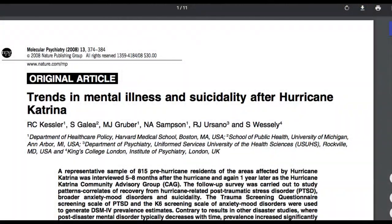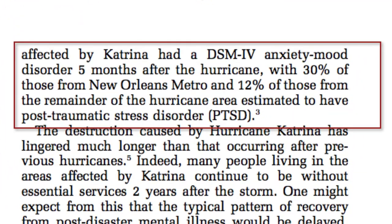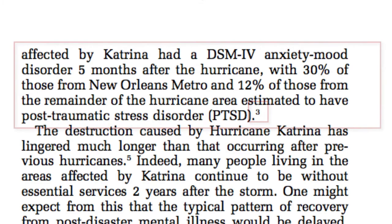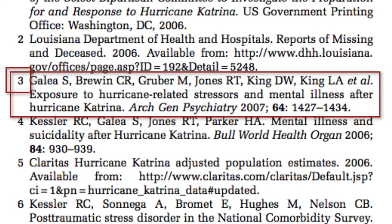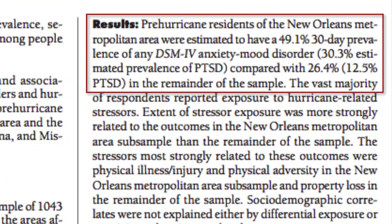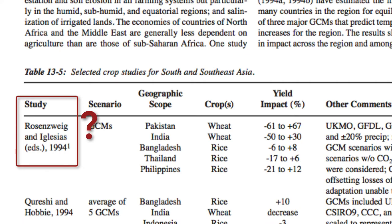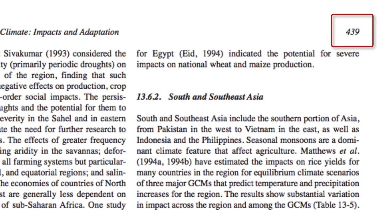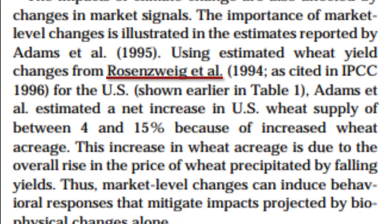It can be confusing when the information you want to cite credits another source. When this happens, try to find the original source of information, because the source in front of you might be representing the original idea inaccurately or incompletely. If you cannot find the original, record all of the information of the source you have and the who and when of the original source.